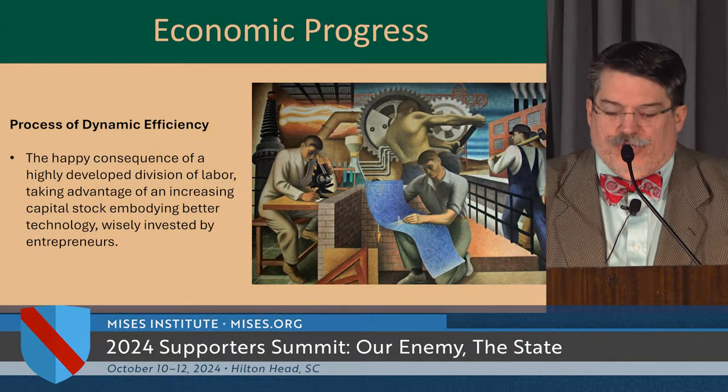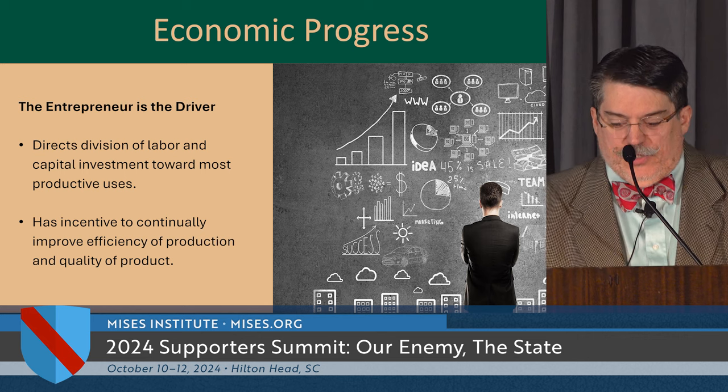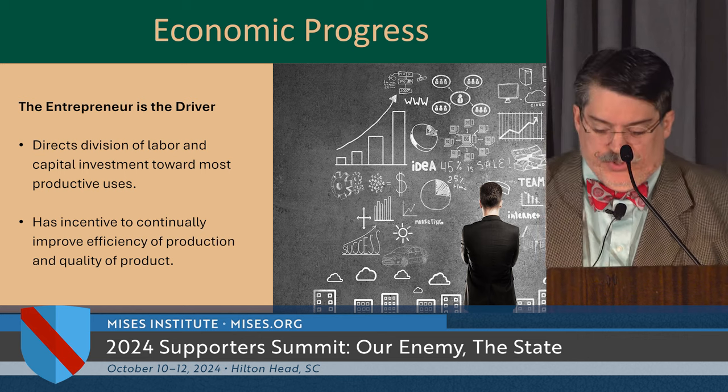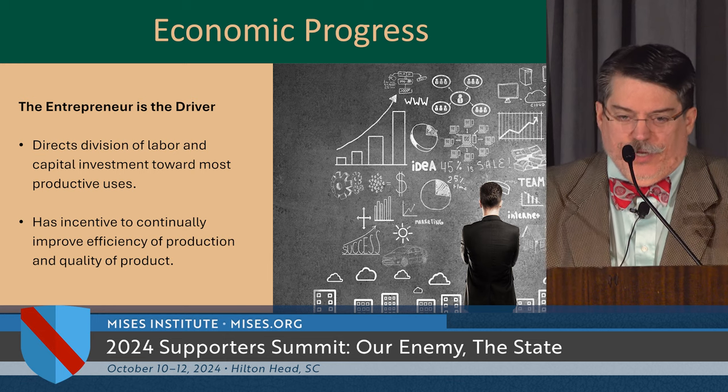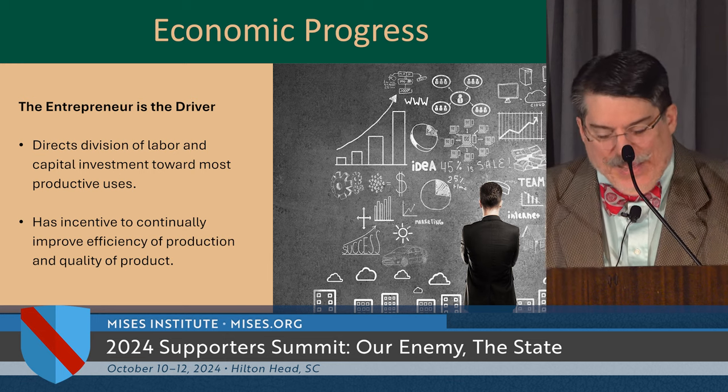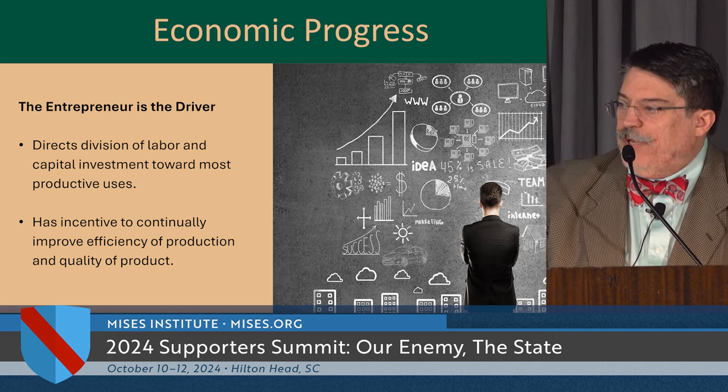We benefit from technological advance — capital goods at a higher level of productivity and production processes more productive than before. Those technological advances are always embodied in physical capital goods. The knowledge exists out there, but for technology to be operational, it has to actually be embodied in physical capital goods. One of the things Per just emphasized is that the driver of this is the entrepreneur, who directs and coordinates the division of labor and capital investment toward productive services most highly valued by people in society.